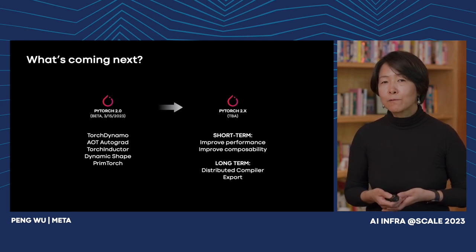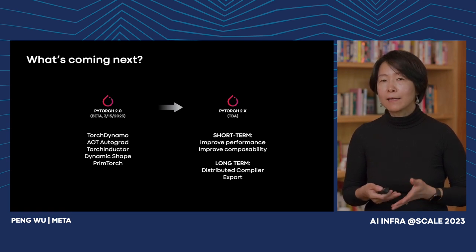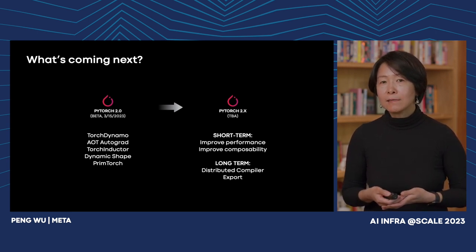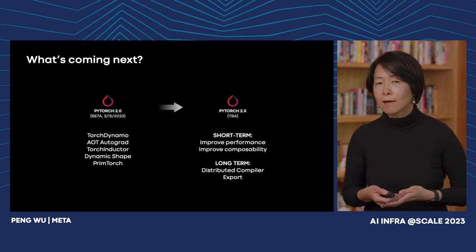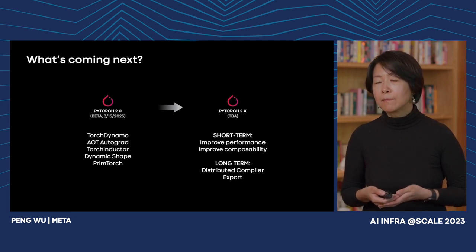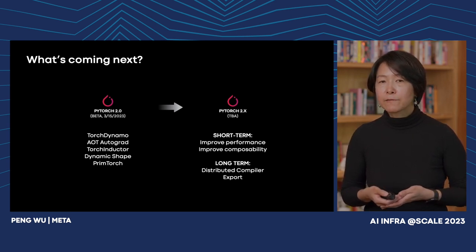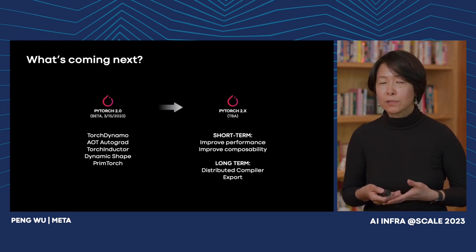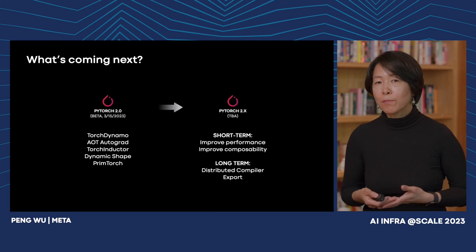Graph mode has a lot of possibilities. In the longer term, roughly a year out or beyond, we see two huge areas to invest in. Number one is a distributed compiler, because today's training workloads are increasingly large and distributed is indispensable for both training and inference — with a distributed compiler we would be able to optimize both compute and communication. The second major feature is PyTorch Export, which would speed up the transition from research to production and allow 2.0 to be used in many production use cases for both training and inference.